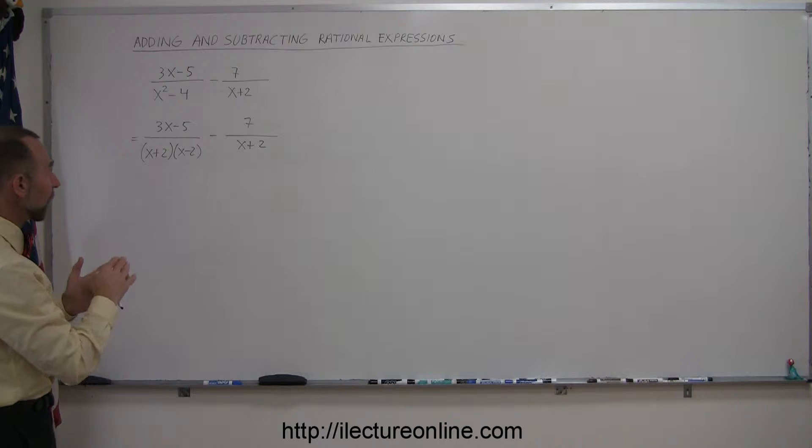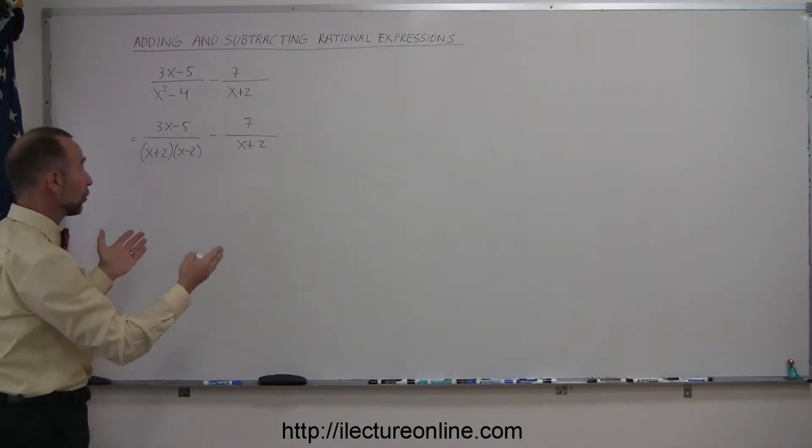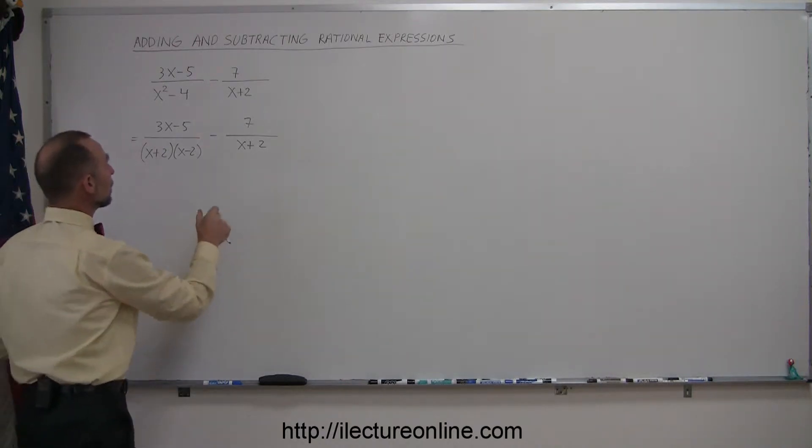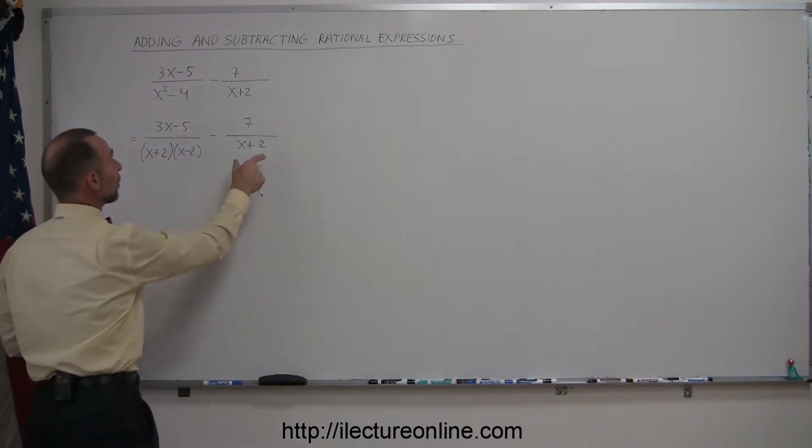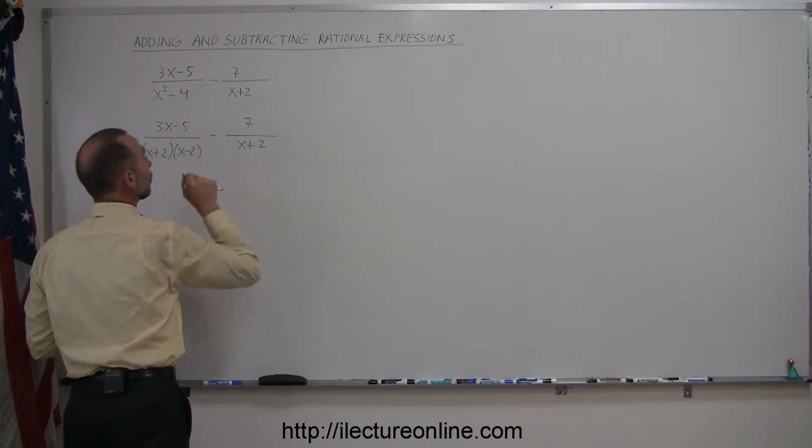To make the denominators common, which is a technique you want to use to add and subtract rational expressions, you're going to need to multiply this denominator by the part that's missing, which is x minus 2. Of course, if you do that to the denominator, you must do the same to the numerator.